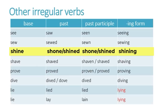The next one is interesting because it has two separate meanings and two different forms. Generally, if we're saying something like 'the sun shone' — meaning it exhibited brightness — we would use the first form: shone, for both the past and the past participle. However, if we're talking about making something shiny, for example 'I shined my shoes,' then we would use the regular verb ending: shine, shined, shined — with the ED.